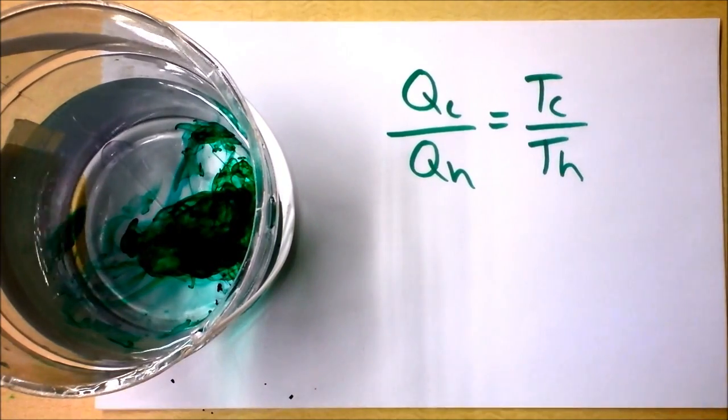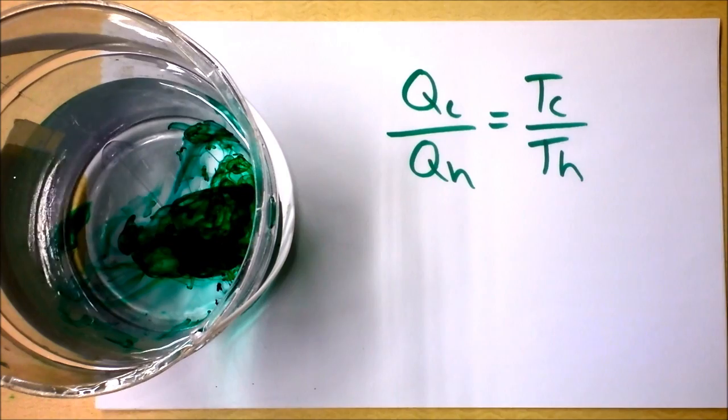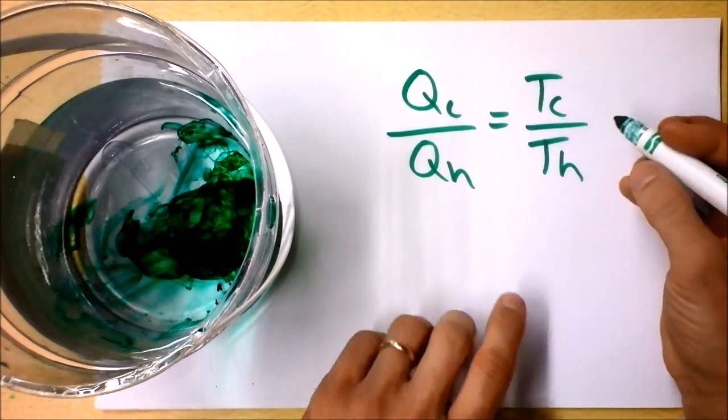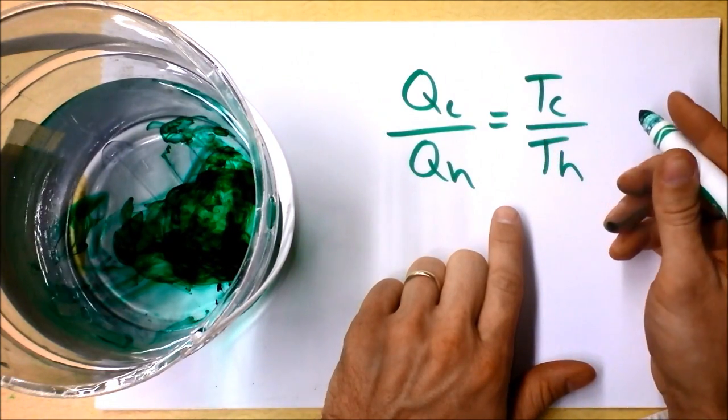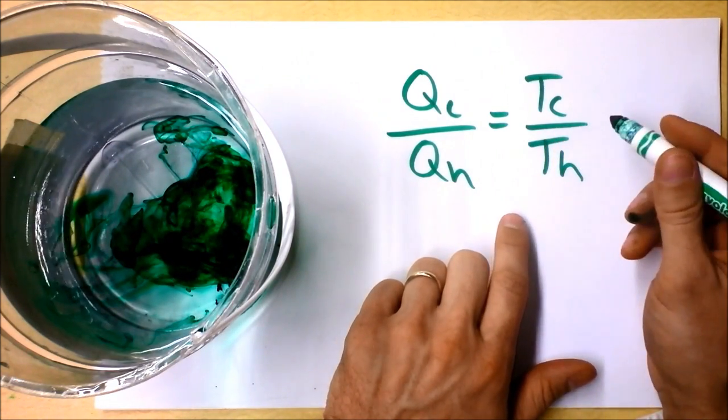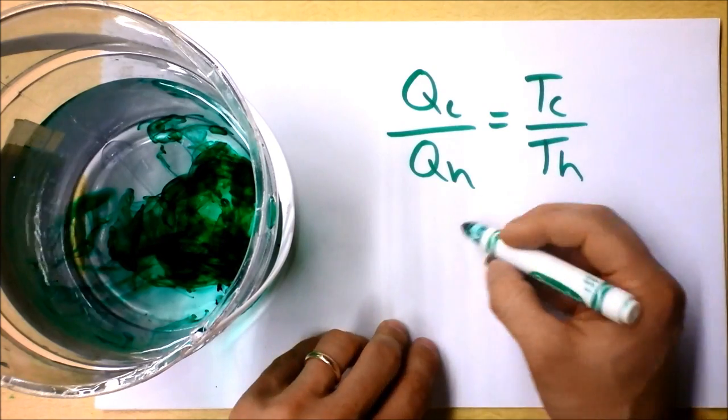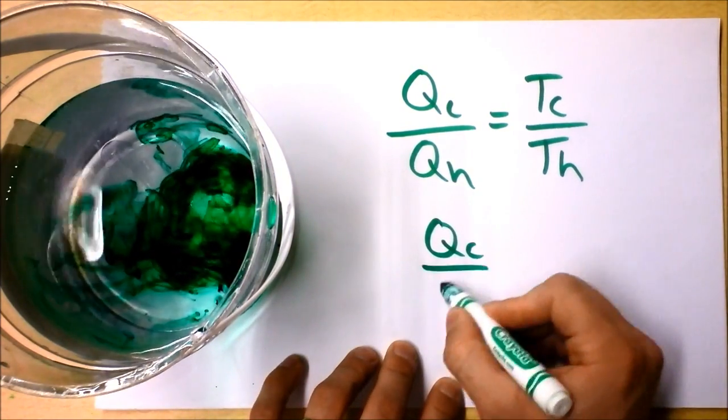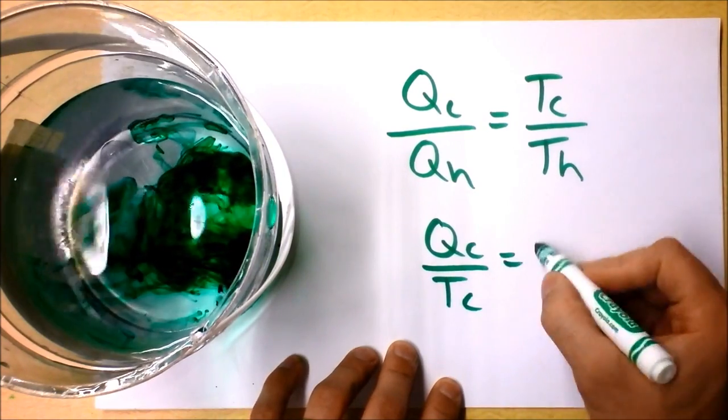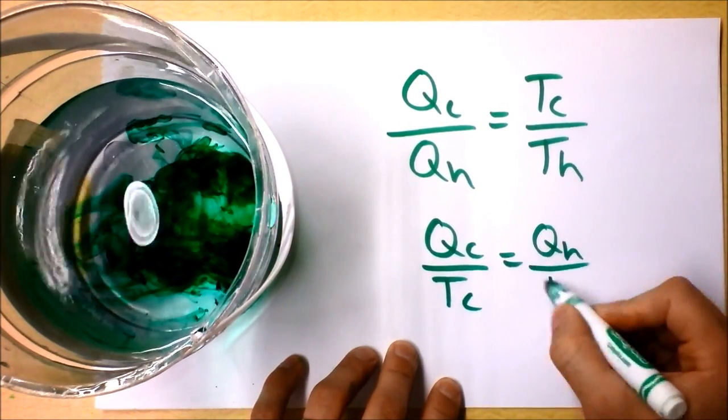And in fact, he used that to define what temperature means. And as he defined that, some folks noticed that if you get everything with C on one side and everything with H on the other side, you could get this beautiful equation. It says QC over TC is equal to QH over TH.